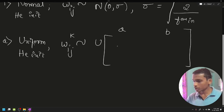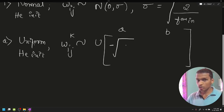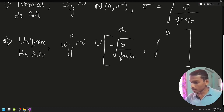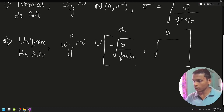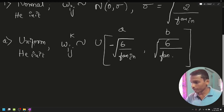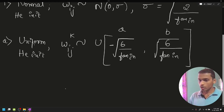Additionally, for Xavier or Glorot uniform initialization, the weights are drawn from a uniform distribution with a term of minus the square root of 6 divided by fan in plus fan out, and a term of plus the square root of 6 divided by fan in plus fan out. This uses the fan out concept as well.